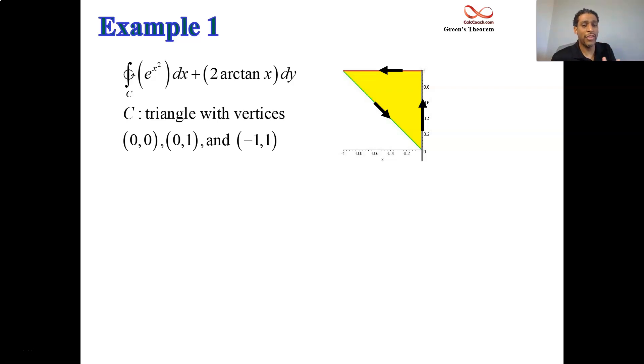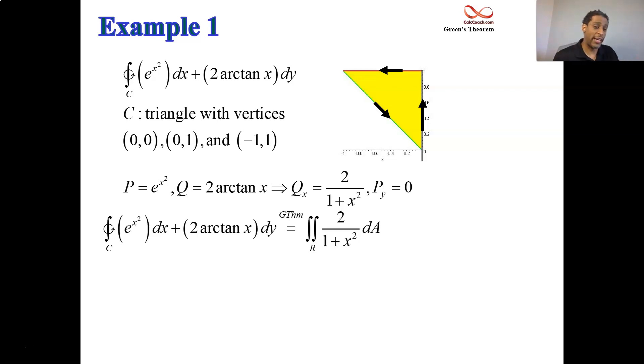So we look inside and we check for QX and PY. The P function is e to the X squared, the Q function is twice the arctan of X. The X partial on Q is two over one plus X squared. And the Y partial on P is zero, there are no Y's in that function. So QX minus PY is not zero. And the difference between QX minus PY is what goes inside of the double integral. So we're trading our line integral for the double integral over this triangular region.